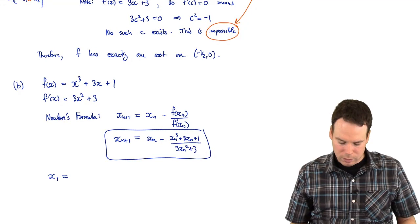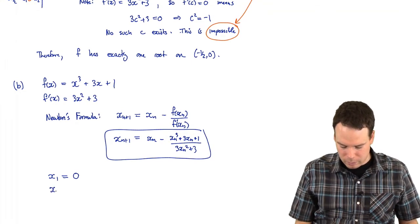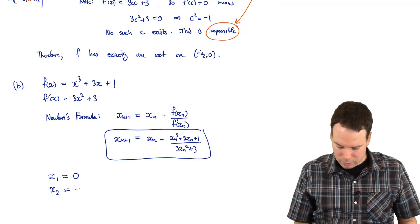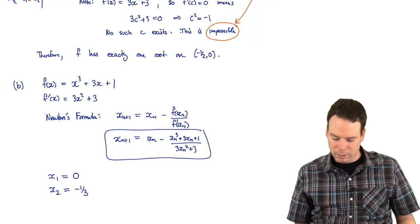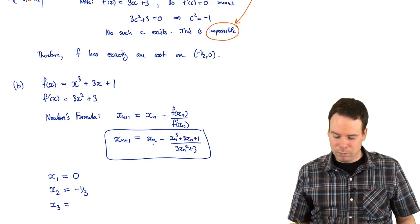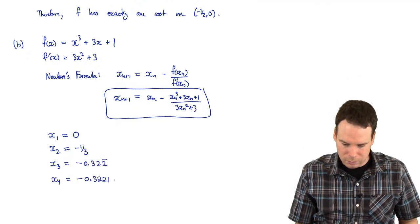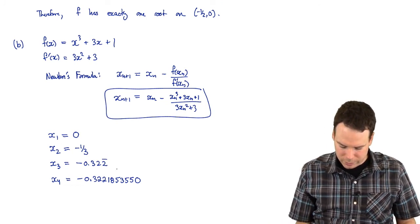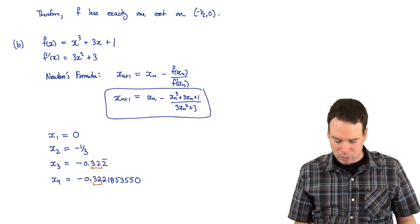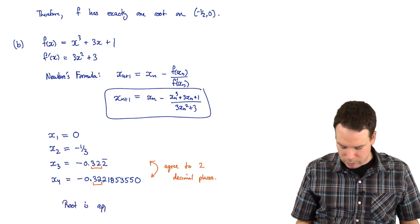We just need a good initial guess. We're on the interval negative one-half to zero, so maybe we'll take zero as our initial guess. Plugging zero in gives negative one-third as our next iterate. Then we plug that in and use the computer to crank out the remaining iterations. We were asked to stop when iterations agreed to two decimal places, and we see that the iterations converge — the root is approximately negative 0.32.